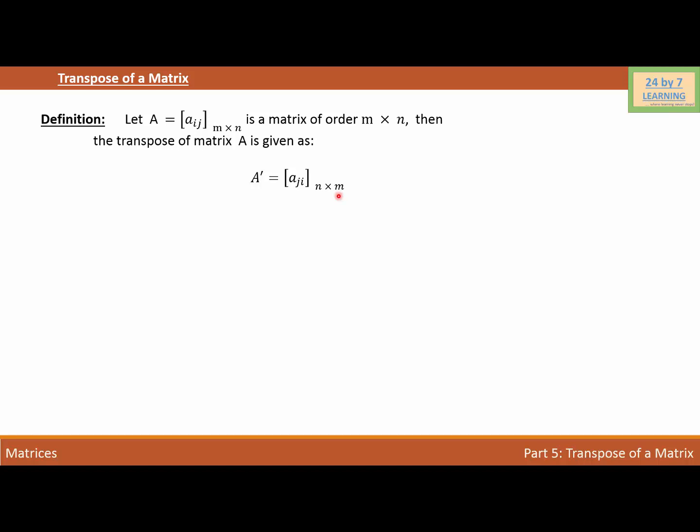Basically, in order to find the transpose of a matrix, we interchange rows into columns and columns into rows. And that's how the order of the matrix is also changed from m by n to n by m.